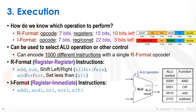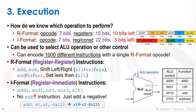The immediate-format instructions include ADDI, ANDI, ORI, XORI, and set-less-than immediate (SLTI). There is no SUBI instruction — the reason being that you can simply add a negative immediate. Since the immediate is signed, if you want to subtract a constant you just encode that constant as a negative, so for example x1 = x2 - 123 is achieved by x1 = x2 + (-123).